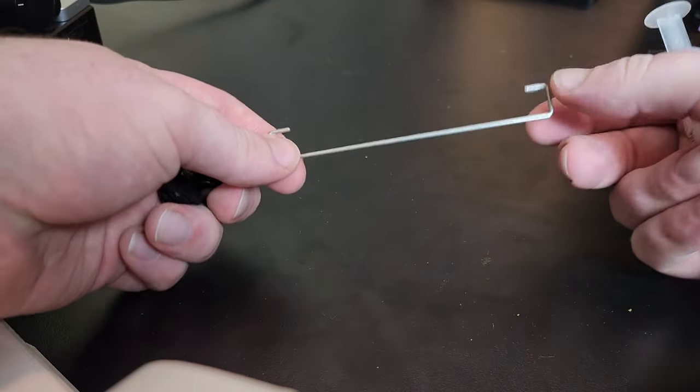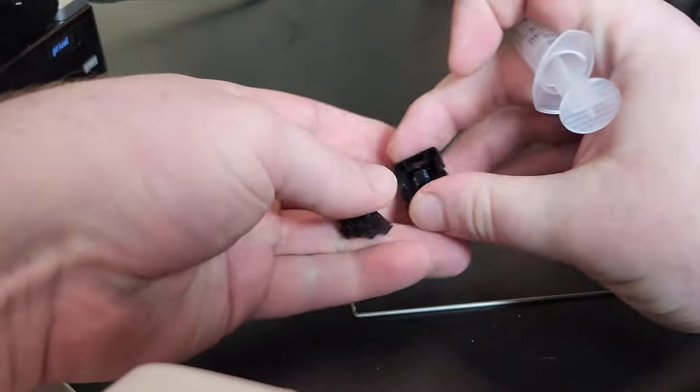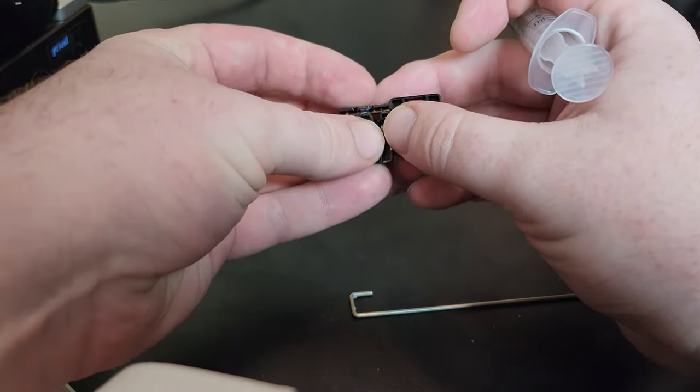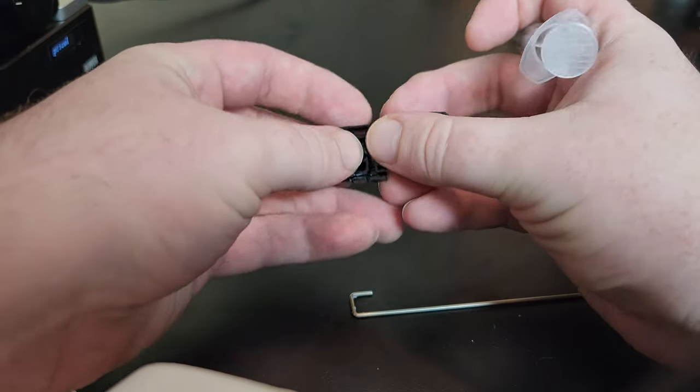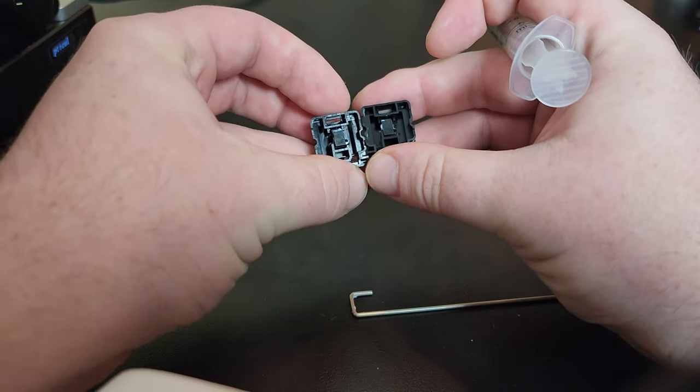How I lube my Topre spacebar stabilizer bars. This is it disassembled - the left and the right are the same.